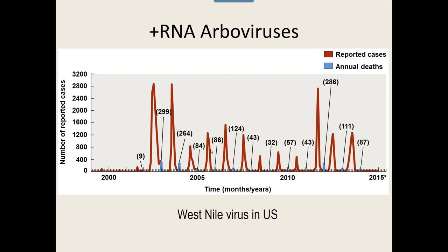Since West Nile was originally found in birds, it does seem to be found more in birds than in humans. If you ever hear in the news that there was a bunch of dead birds somewhere, they will test them to see if they died from this particular virus — it can kill birds as well. Every summer, if there are dead birds that look like they literally just fell out of the sky, they will test them around here. Horses also seem to pick up this virus quite often; birds and horses are the two big carriers around here.